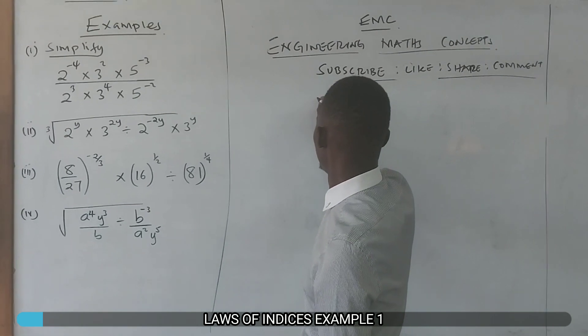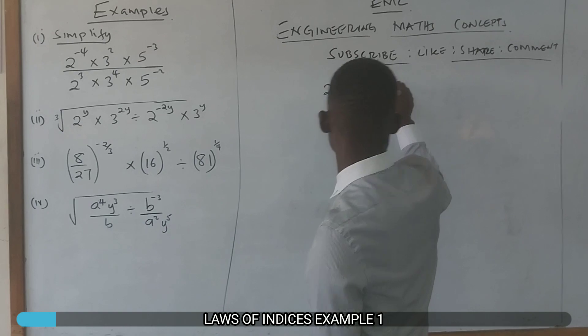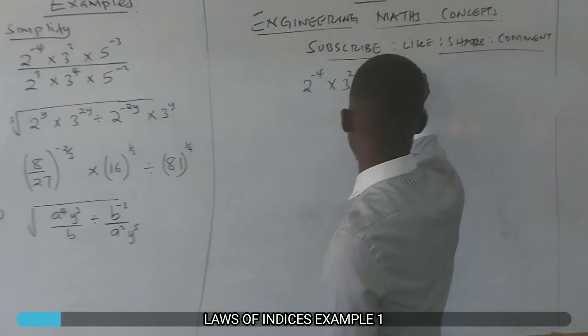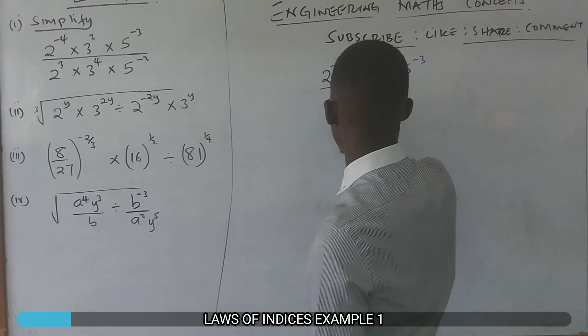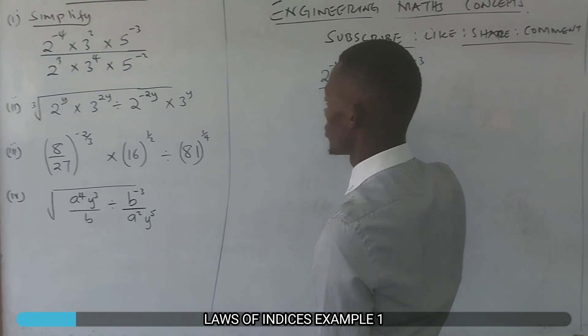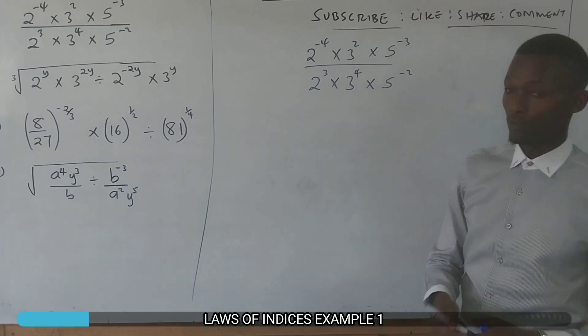That is 2^-4 × 3^2 × 5^-3 divided by 2^3 × 3^4 × 5^-2.